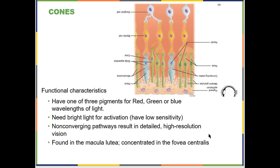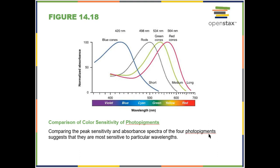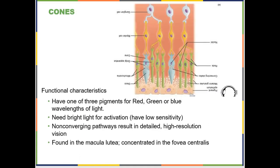Cones, by contrast, come in three different types — red, green, and blue — that respond to different wavelengths of light. Here are your blue, green, and red cones; rods respond to just one band of wavelength. Cones are responsible for your sense of color. They are not as sensitive as rods, so you need bright light for cones to work. This is why you don't see color well in the dark — just different shades of gray.